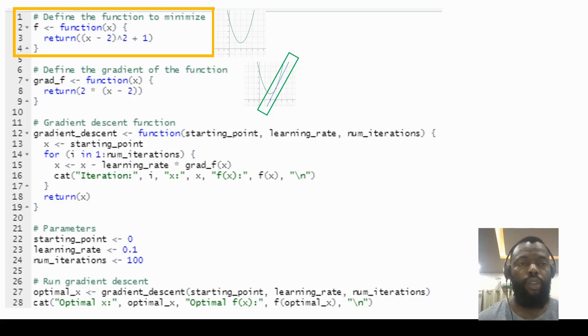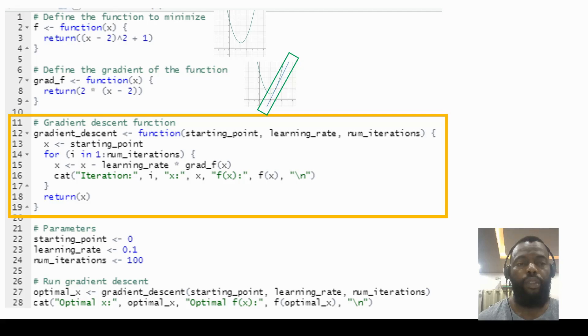So here we define the function that we are trying to minimize, and here we define the gradient of the function that we try to minimize.